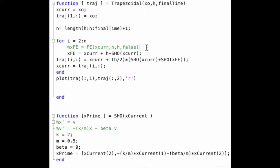Below the trapezoidal code, for completeness, I provided the simple harmonic oscillator code as well. This was also provided in earlier homework solutions. Note that k equals 2, m equals 0.5, and beta equals 0 are the parameters that we will use throughout this homework.